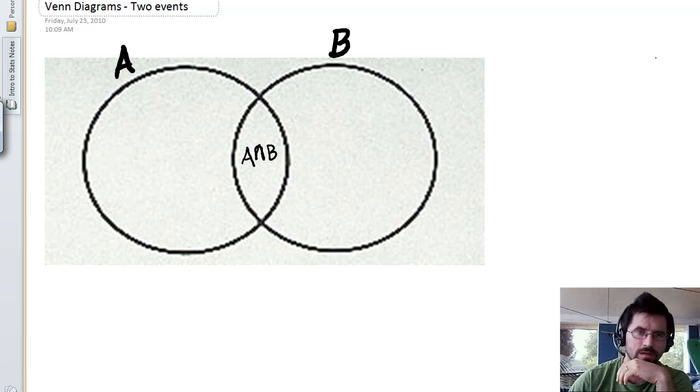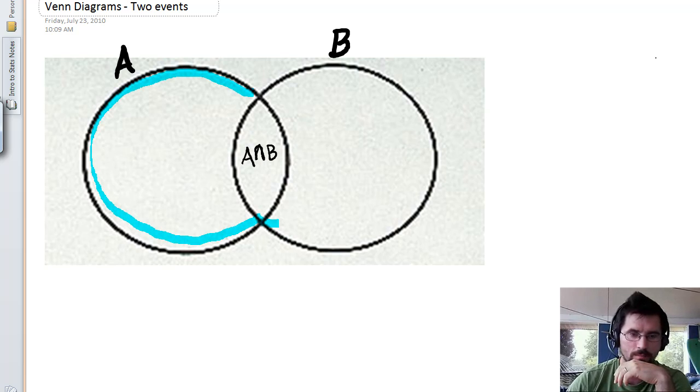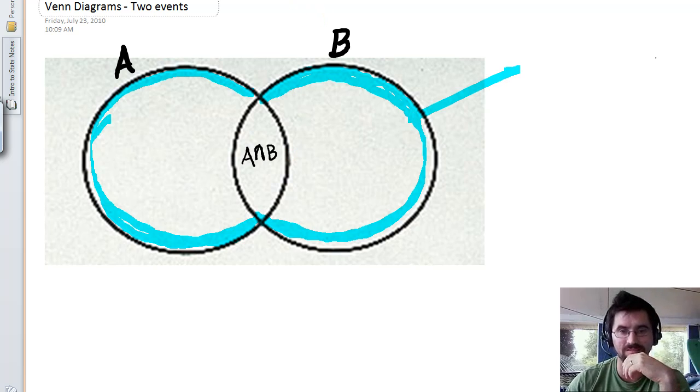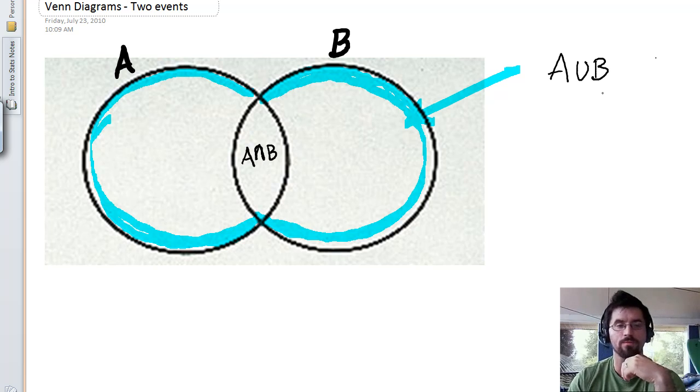The union is going to be, now you'll forgive me and not take any offense because we're all adults here, but this shape is, to me it looks like a butt print. You get out of the pool, your bathing suit's wet, you sit on the deck, and this is the shape you leave. So that is the shape of the union of two events. A union B is that butt print.